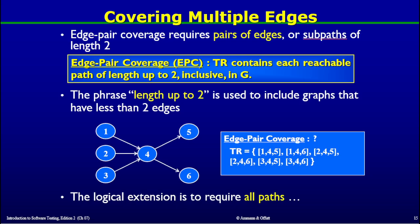The next definition is for when we want to cover more than one edge on a graph. The criterion is called Edge Pair Coverage, or EPC. The test requirement in this case contains each path of length up to two. Note this phrase 'length up to two' — it has been written to include graphs that have fewer than two edges.